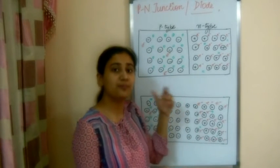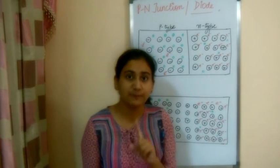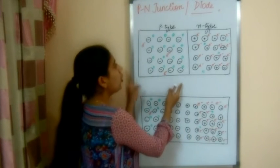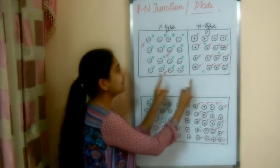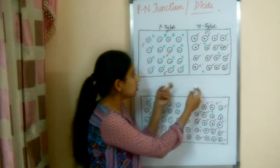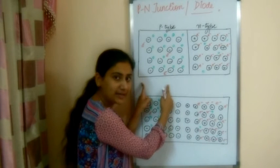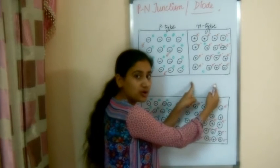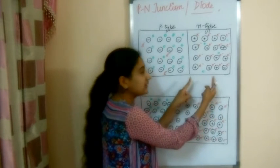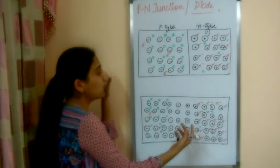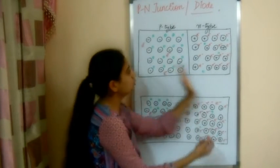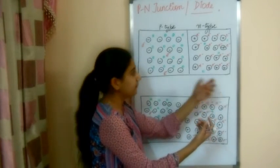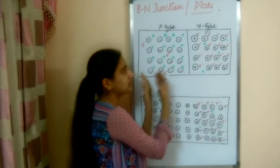The same diffusion principle applies here — it is the basis for the formation of the depletion layer. Holes are in majority in P-type and electrons are in majority in N-type. So the concentration of holes in P-type is higher than in N-type, and the concentration of electrons is higher in N-type than in P-type. Therefore, holes start moving from P-type toward N-type, and electrons start moving from N-type toward P-type.